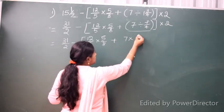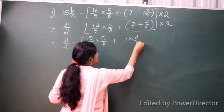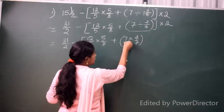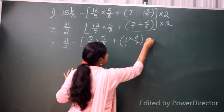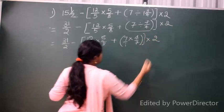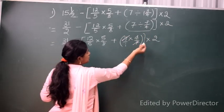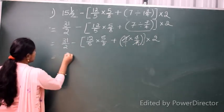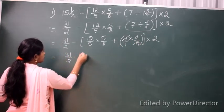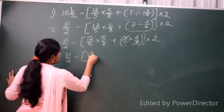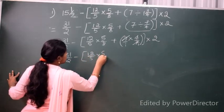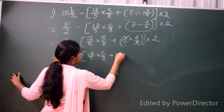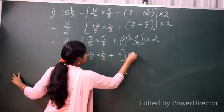So the division becomes 7 × 4/7 × 2. Now 7 and 7 cancel out, leaving us with 31/2 minus [12/5 × 5/8 + 4 × 2].